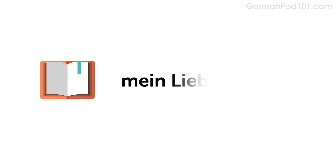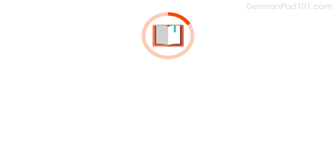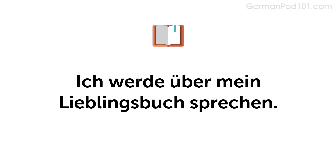Now imagine you're going to talk about your favorite book. Do you remember how to say: my favorite book? Mein Lieblingsort. Say: I'm going to talk about my favorite book. Ich werde über mein Lieblingsbuch sprechen. Now answer the question saying you're going to talk about your favorite book. Worüber wirst du sprechen? — Ich werde über mein Lieblingsbuch sprechen.